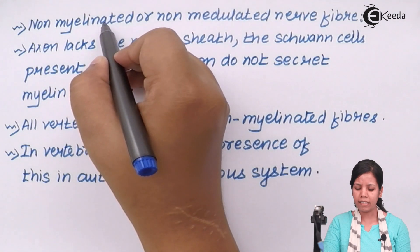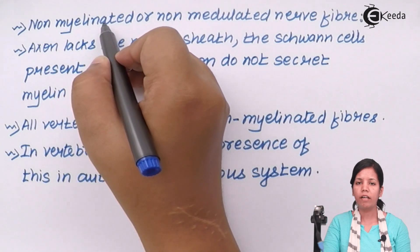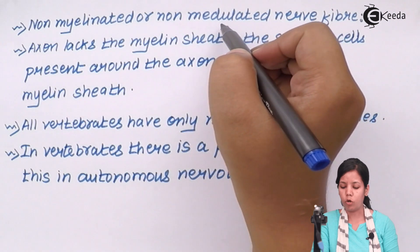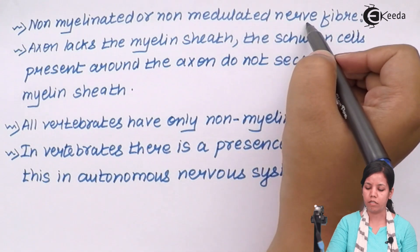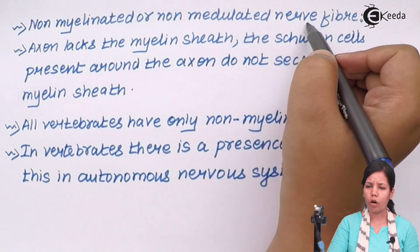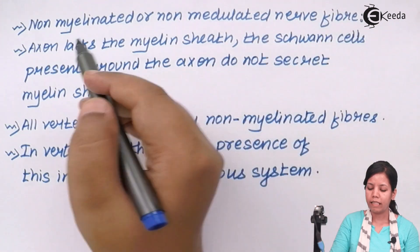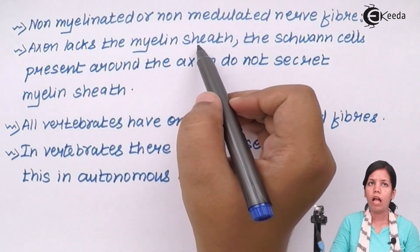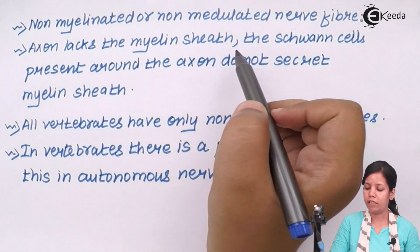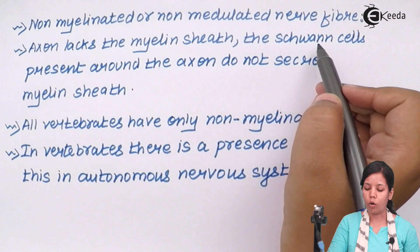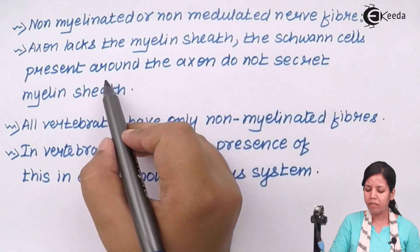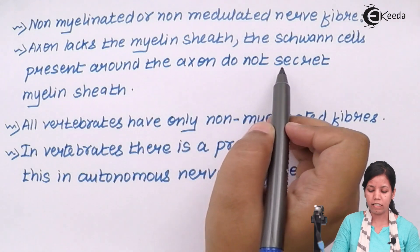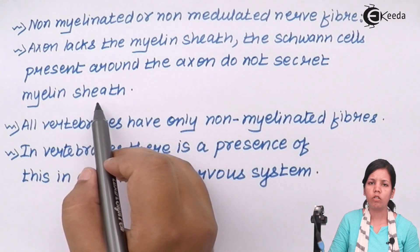The next type is the non-myelinated, or non-medullated, nerve fiber. Being non-medullated, the axon basically lacks a myelin sheath. Because it lacks a myelin sheath, the Schwann cells present around the periphery of the axon never secrete a myelin sheath.